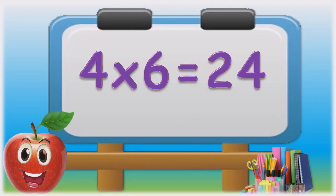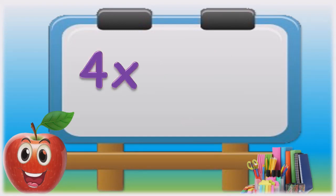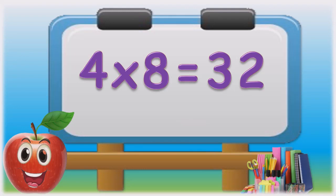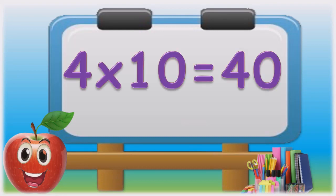Four sevens are twenty-eight. Four eights are thirty-two. Four nines are thirty-six. Four tens are forty.